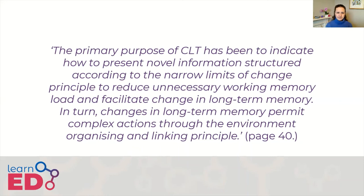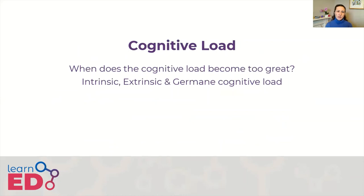So, cognitive load — when does it become too great? When we talk about working memory, the standard capacity is Miller's magic number: seven plus or minus two. However, research suggests that while this holds for information in isolation, when there is interactivity this number reduces to something like four chunks of information. So if I'm asked not only to remember some numbers but also to do some arithmetic, I'm likely to only remember and process four chunks at a time. This explains the difference between novices and experts, and why it might be helpful for children to memorise their times tables.